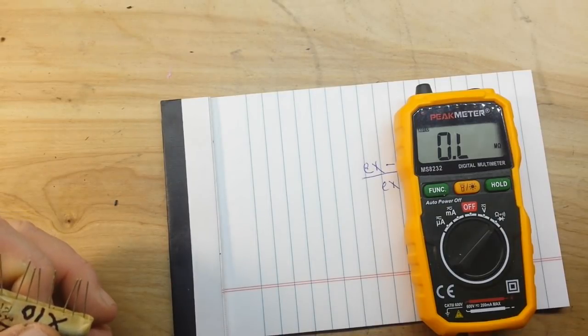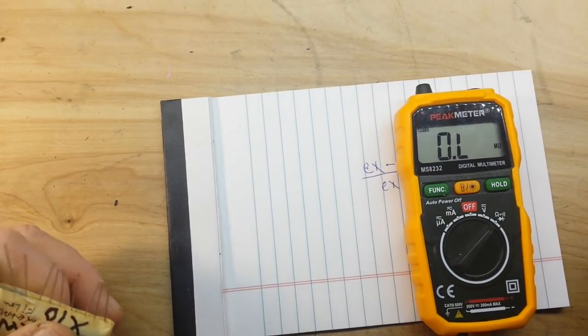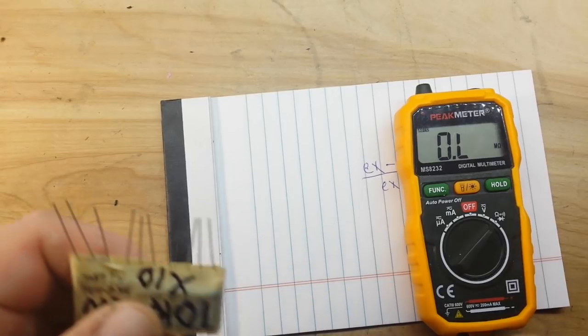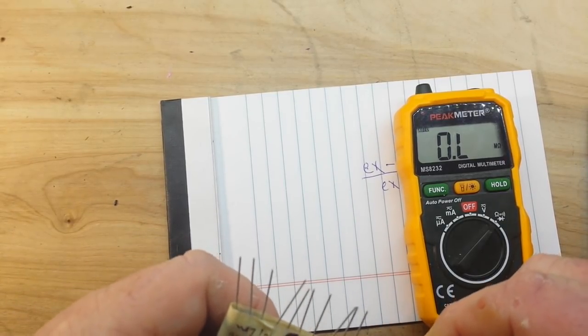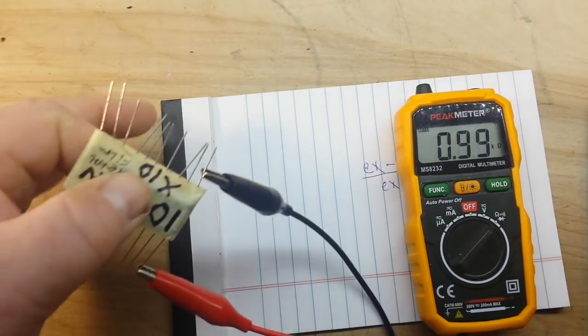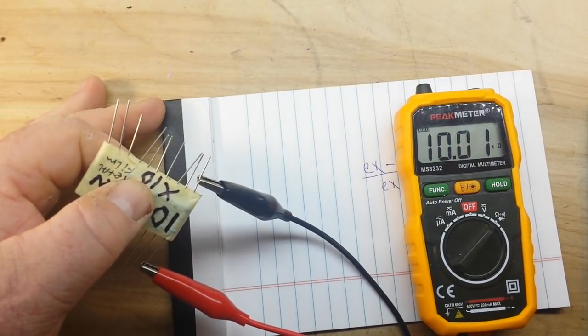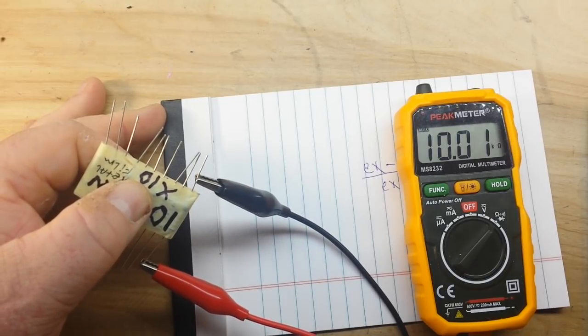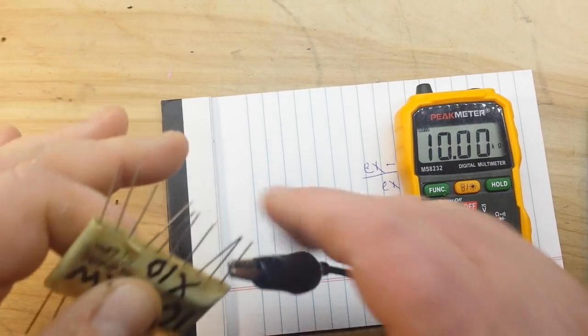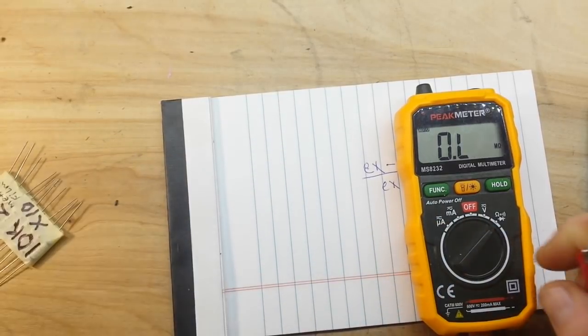Alright, we're going to start with this super cheap meter, which I have found to be very accurate. So we put our leads on there and you can see we're getting 10.01K. Alright, now let's grab another meter.